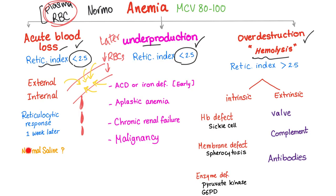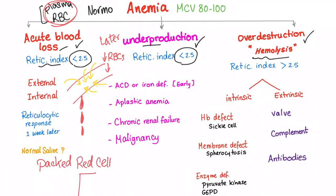There is a problem with giving normal saline to a patient who is bleeding. The patient is losing both RBCs and plasma, but normal saline acts like plasma only — so you are giving plasma without replacing the RBCs, causing an RBC deficit to appear. That's why we now use packed red cells, which are bags containing only red blood cells. One unit of packed red cells should increase hemoglobin by one and hematocrit by three.